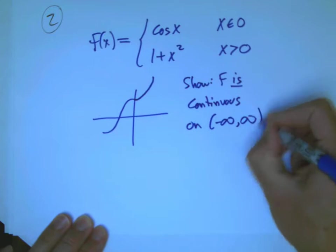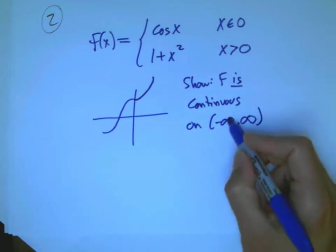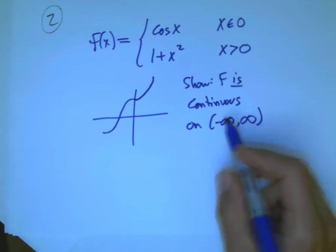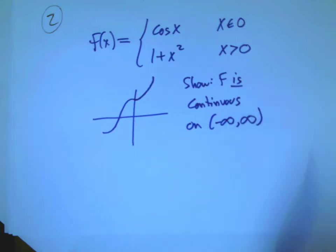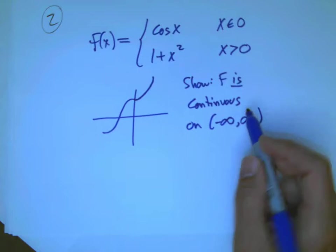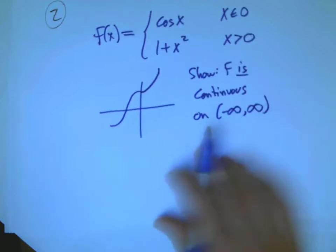So, I'd like to show that f is continuous everywhere, or a fancy way for that is to use interval notation from minus infinity to infinity. Now, remember, infinity is never a number. This is just a shorthand for the whole real line with no finite limit either way.